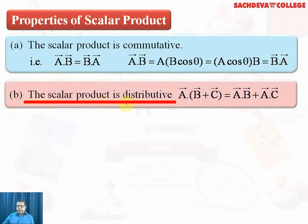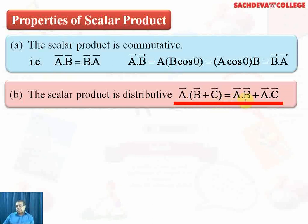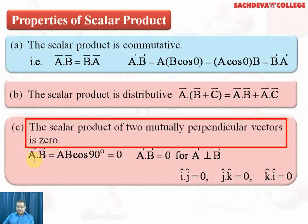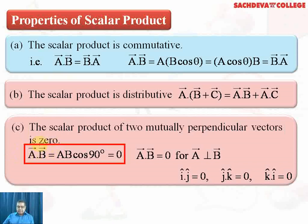Another property is the scalar product is distributive: vector A dot (vector B plus vector C). In the distributive property, vector A is multiplied by vector B and we then add the product of vector A with vector C. So vector A dot (B + C) equals the dot product of A and B plus the dot product of A and C. The scalar product of two mutually perpendicular vectors A and B will be equal to AB cos 90, and since cos 90 is 0, the whole number becomes 0.